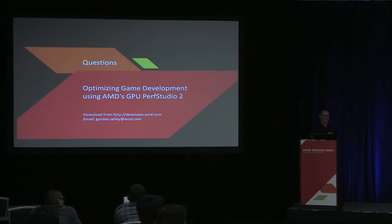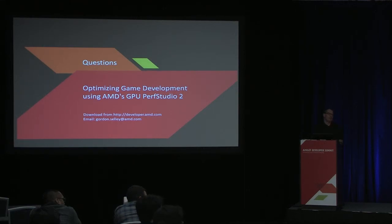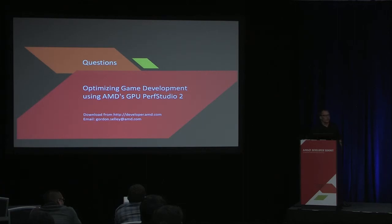Q: When you select certain draw calls, does it highlight where that is in the actual output buffer? A: What we do is show a pink outline that indicates the area being rendered by that draw call. Thanks for coming, guys. Enjoy the conference.